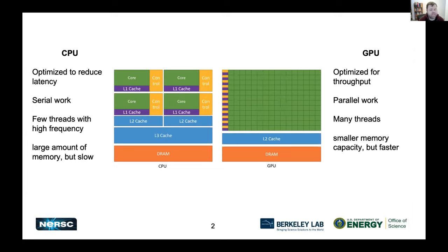On the other hand, a GPU is a throughput-oriented device. It's really suited for parallel work, particularly when you're doing the same operation on many elements — grid points, particles, anything where you're applying the same thing to many different elements of data. It has many more threads, but individually each of those threads is less powerful than a CPU thread. The memory capacity is smaller but much, much faster, as Jack pointed out.